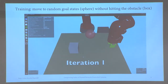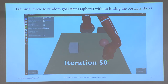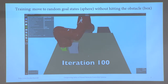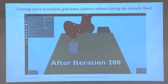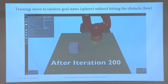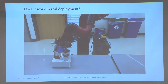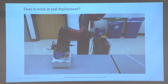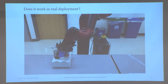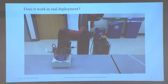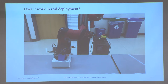Consider a robotic manipulation task where we train a robotic arm to reach randomly generated goal states in the workspace without hitting a box obstacle in the middle. You might train this using reinforcement learning or imitation learning. The key question is: does it actually work in real deployment? We did an experiment in the lab with a Sawyer robot — randomly generating goal states from a small initial set — and wanted to know if the arm can always reach the goal without knocking over a cup on the box.